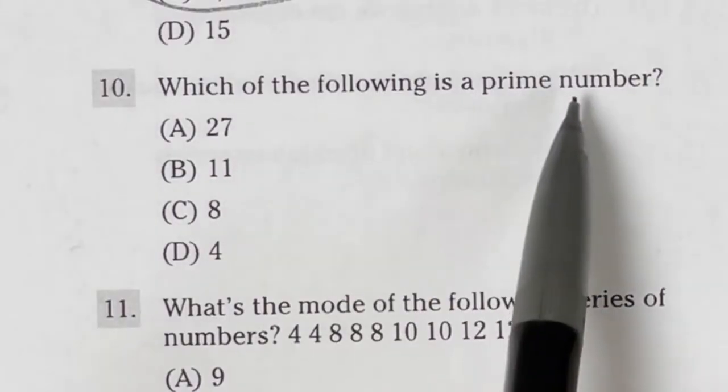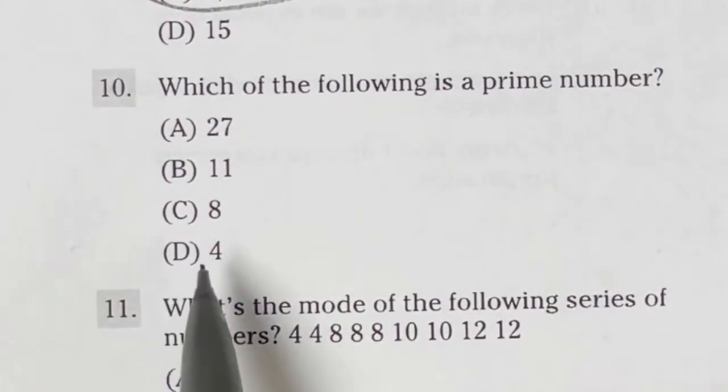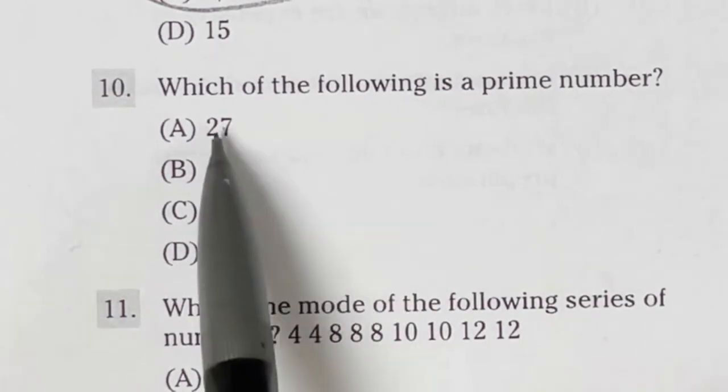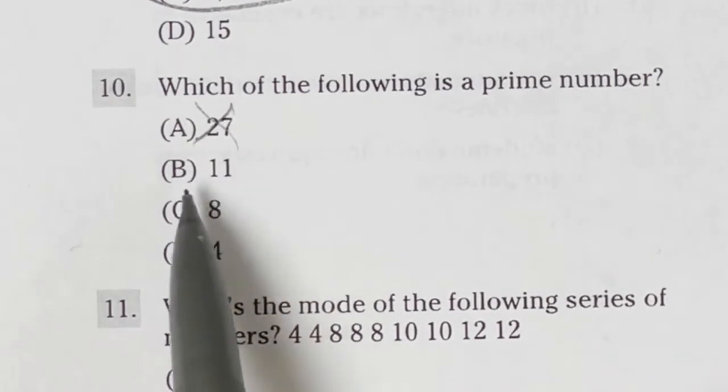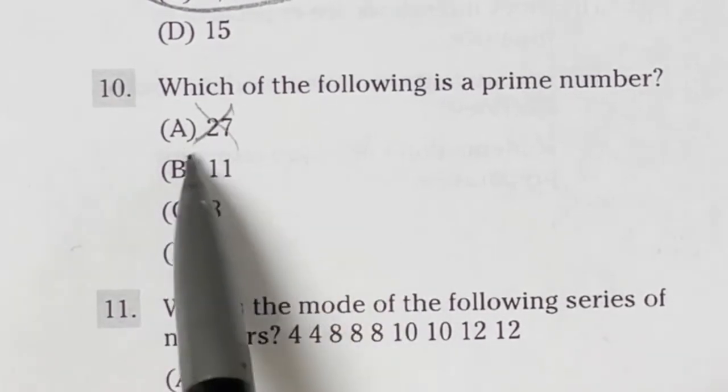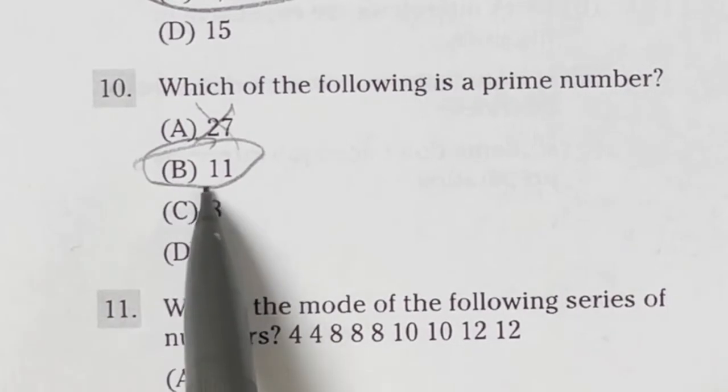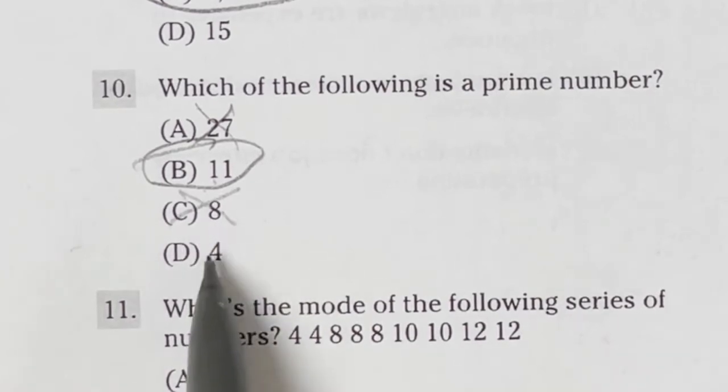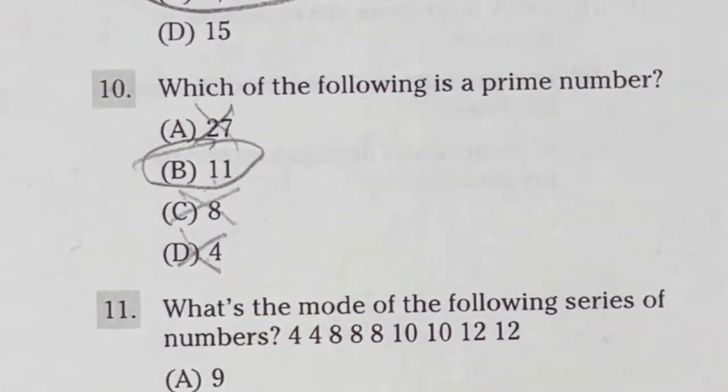Which of the following is a prime number is number 10 for the ASVAB, and it says here 27, 11, 8, and 4. Well, I know that 9 times 3 gives me 27, and prime means that the only number that multiplies to give you that is 1 and the number. The answer here is B for number 11, because you can't multiply anything together to give you that except for 11 and 1. For 8, it would be 4 and 2 that makes that not work, and for 4, it would be 2 and 2 that make that not work.